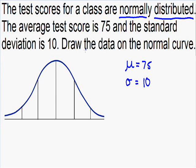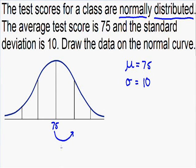This problem asks us to draw the data on the normal curve. The first thing you do is place the average of 75 directly in the middle of the curve. The distance between each line is one standard deviation. Going to the right, we add 10: 75 plus 10 equals 85, and 85 plus 10 equals 95.